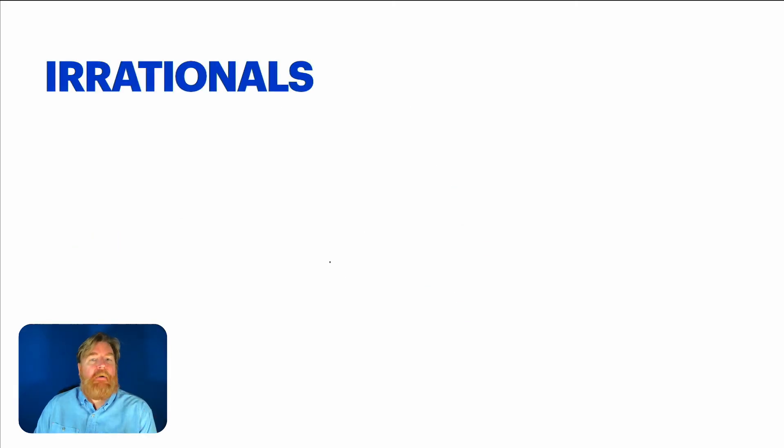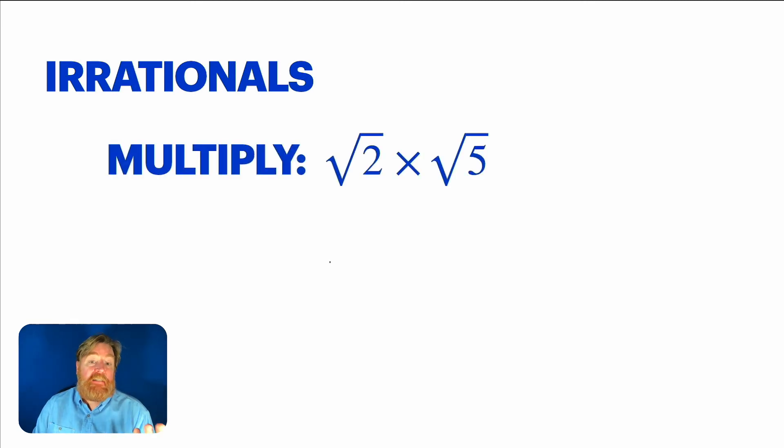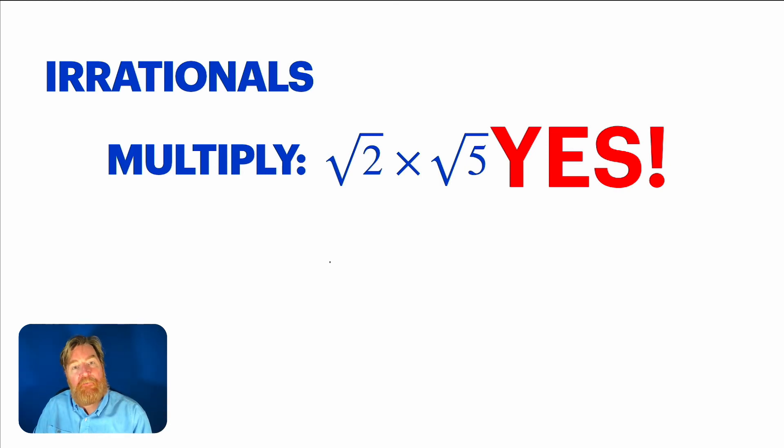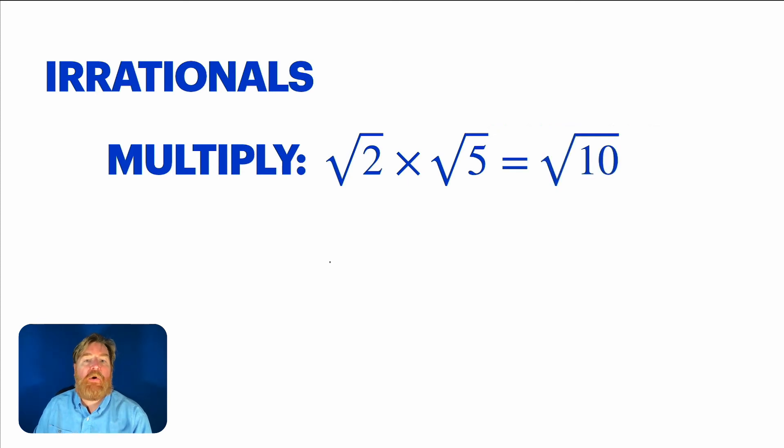All right. How about our last group, the irrationals? We've been talking about the roots. So let's say someone asked you to multiply square root of two times square root of five. And remember if we were asked to add those two things, we would say, no way. Can't do it. They got to be the same, but this is multiplication. So can we multiply those two? Of course, of course we can. And you know, we end up with square root of two times square root of five. You just multiply the two numbers underneath the roots. So we get square root of 10. That's all there is to it.